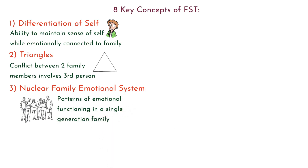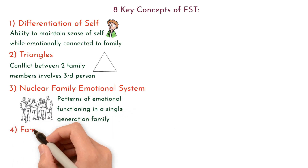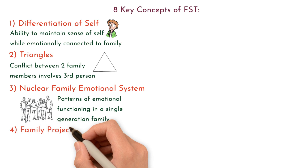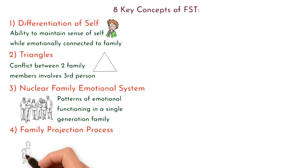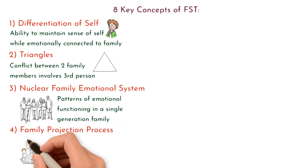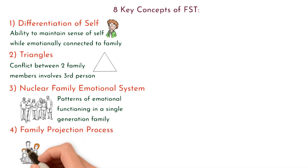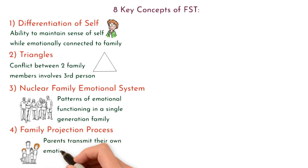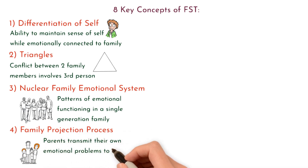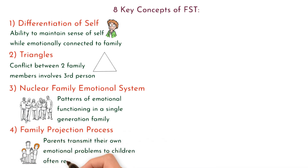4. Family projection process. This process involves parents transmitting their own emotional problems to their children, often resulting in similar issues in the next generation.